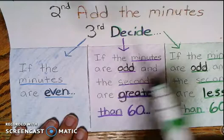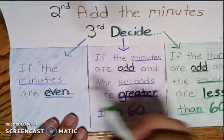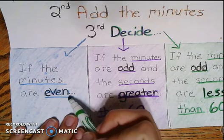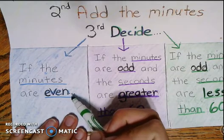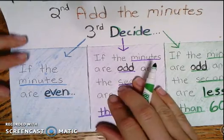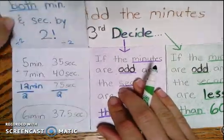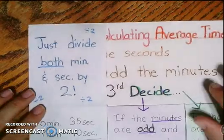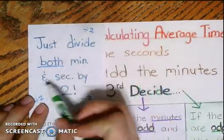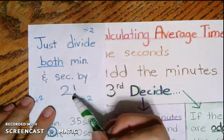So if after we've added the seconds and the minutes, if the minutes are even, it doesn't matter whether or not the seconds are odd or even, just look at the minutes. If the minutes are even, then this is what you're going to do. All you're going to do is divide both the minutes and the seconds by two.